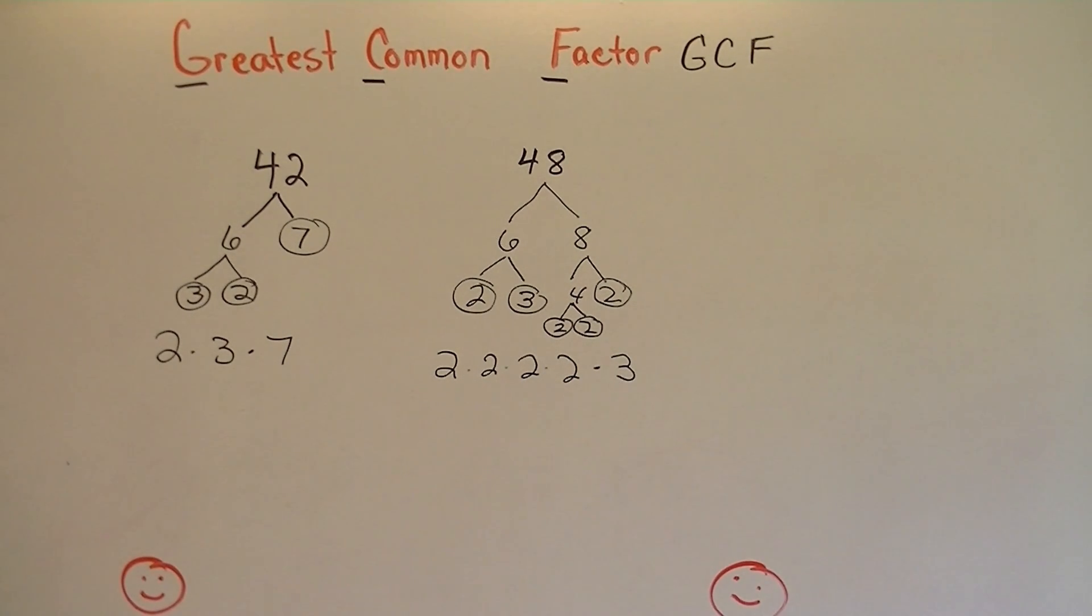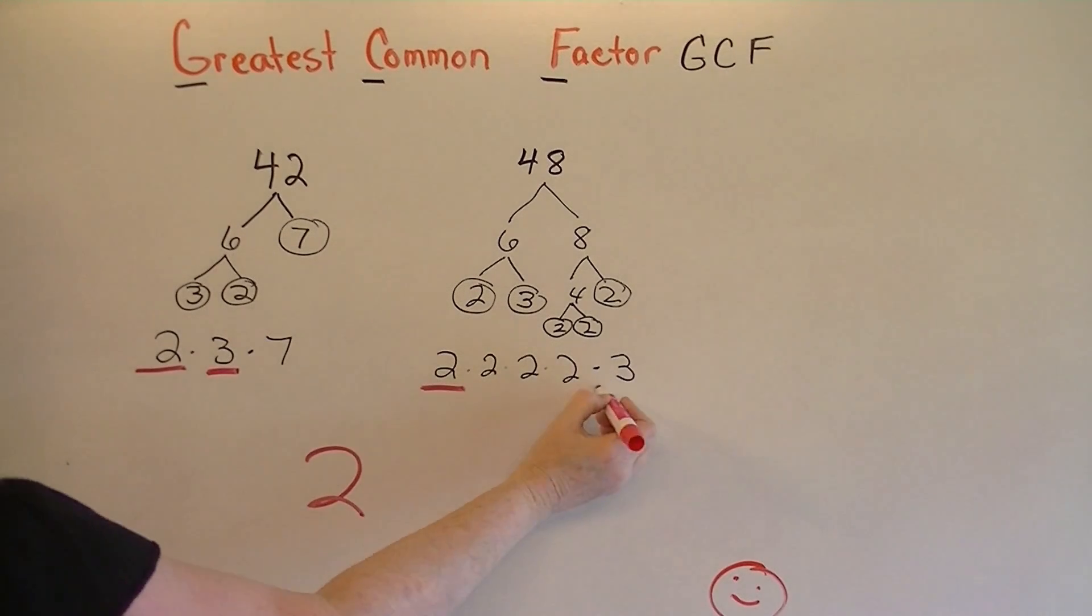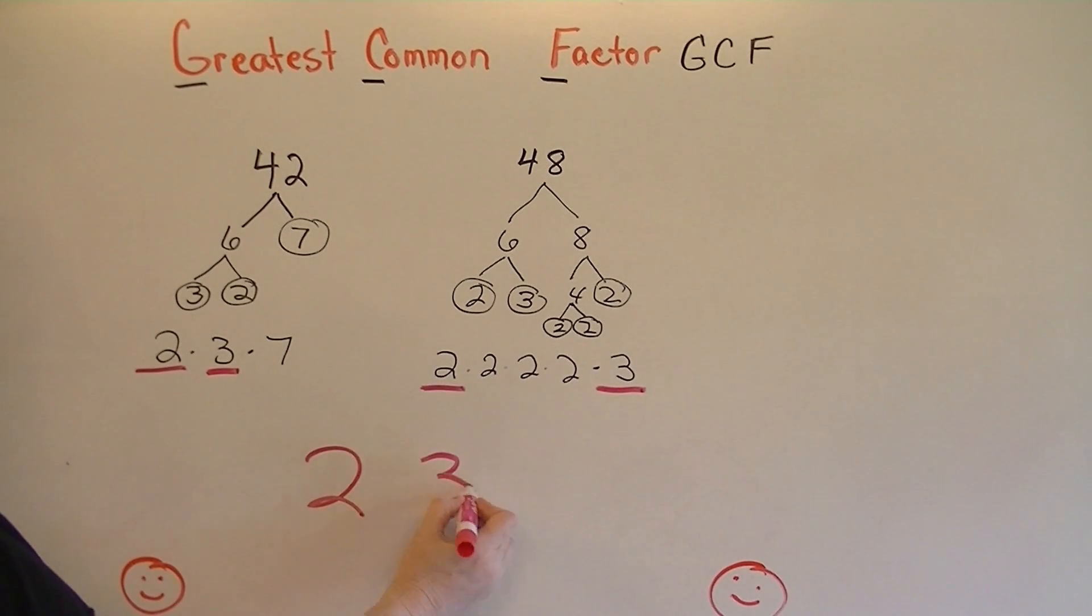Now what we're going to do is look and see what numbers they have in common. Well, 42 has a 2, and so does 48. So if they have them in common, I'm going to list it here. And then 42 has a 3, and 48 has a 3. So I'm going to list that one here. And they don't have 7 in common, so that's it.